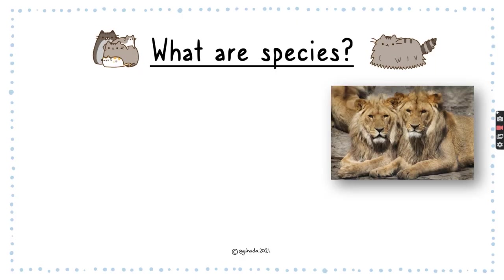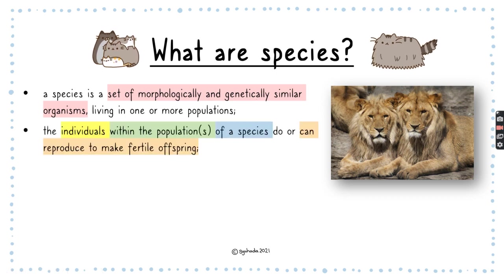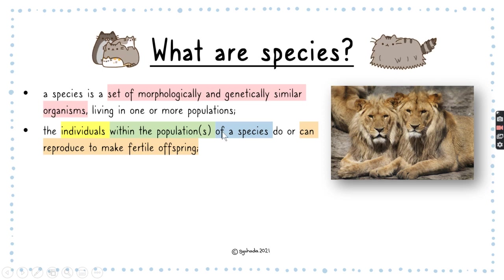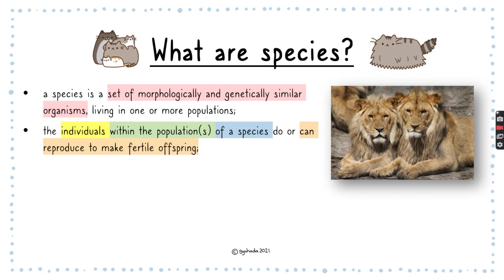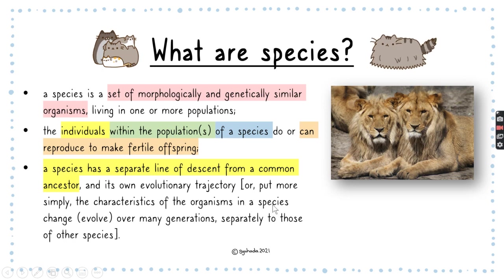So what are species? A species is a set of morphologically and genetically similar organisms — morphology just means how they look, and genetically refers to their DNA. The individuals within the population of a species can reproduce to make a fertile offspring. A species has a separate line of descent from a common ancestor and its own evolutionary trajectory.